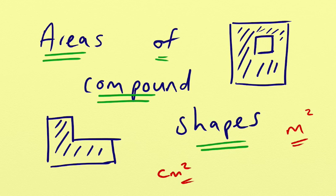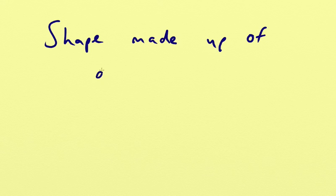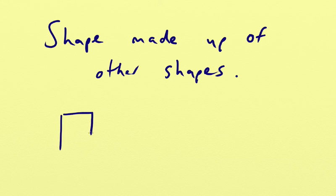In this video, we're going to take a look at working out the area of some compound shapes. A compound shape is a shape made up of other shapes. To demonstrate, if we draw something that looks like an L shape — imagining they're all perfectly straight lines — that falls under the bracket of compound shapes because it's a shape made up of other shapes.